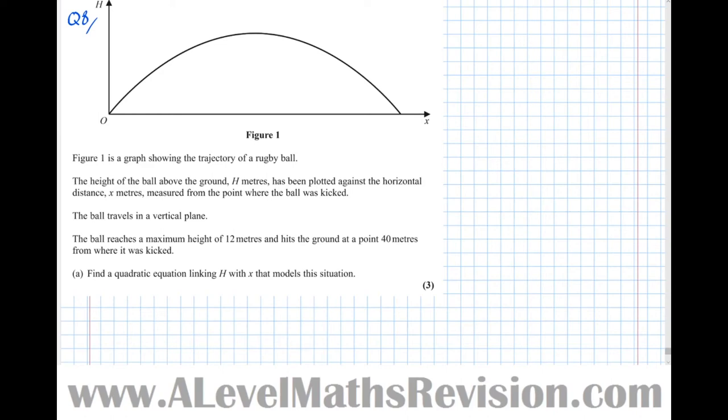Question 8 says figure 1 is a graph showing the trajectory of a rugby ball. The height of the ball above the ground h metres has been plotted against the horizontal distance x metres measured from the point where the ball was kicked. The ball travels in a vertical plane.